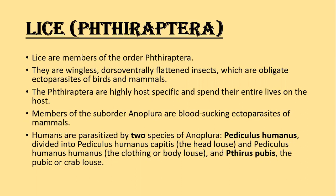Humans are parasitized by two species of Anopleura: Pediculus humanus and Pthirus pubis. Pediculus humanus is further divided into Pediculus humanus capitis, which is the head lice, and Pediculus humanus humanus, which is the clothing or body lice. Pthirus pubis is also known as the pubic or crab lice.